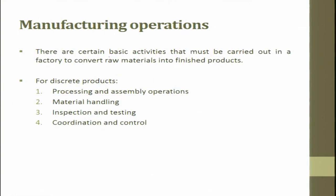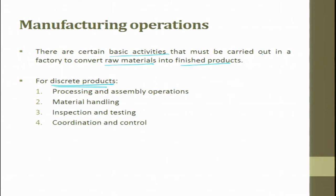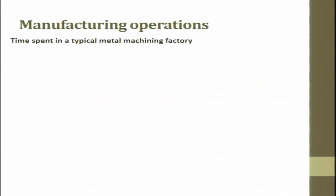When we talk about manufacturing operations, there are certain basic activities that must be carried out in a factory to convert raw material into a finished product. For discrete part products, the processing and assembly operations are part of operations carried out. Material handling, inspection and testing, and coordination and control are also key. These are very important for discrete part manufacturing, which is the primary focus of our discussions.